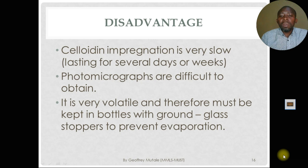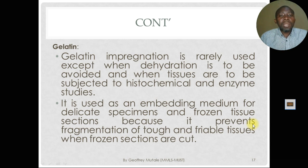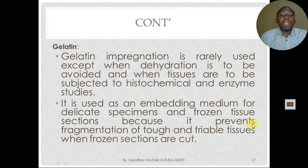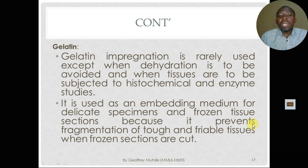Gelatin impregnation is rarely used except when dehydration is to be avoided and when tissues are to be subjected to histochemical or enzyme tissue studies. It does not interfere with the chemical constituents of the tissue, thereby preserving proteins and lipids that can be studied later. It is also used as an embedding medium for delicate specimens and frozen tissue sections because it prevents fragmentation of friable tissues when frozen sections are cut.